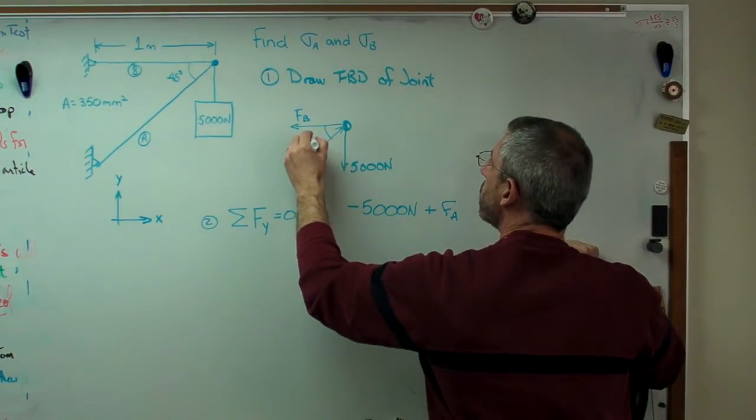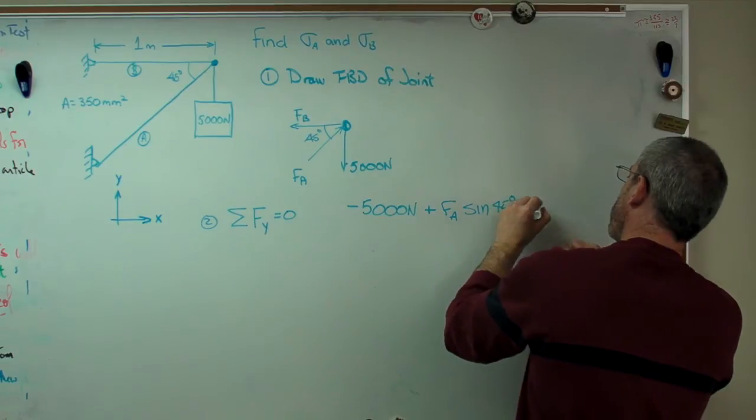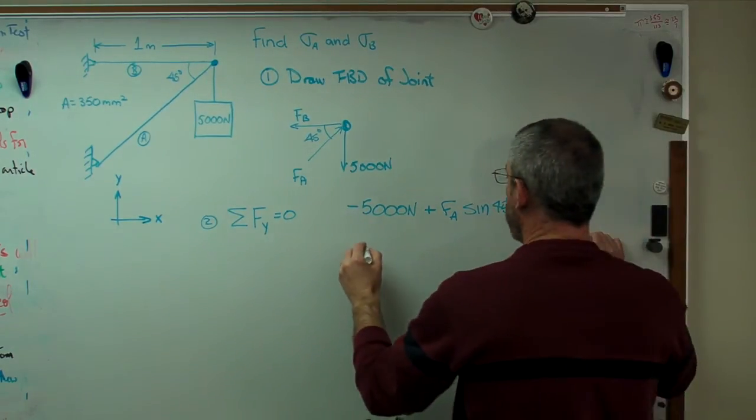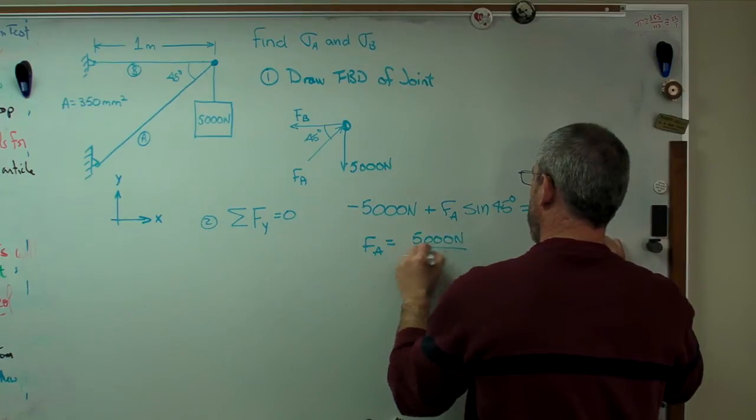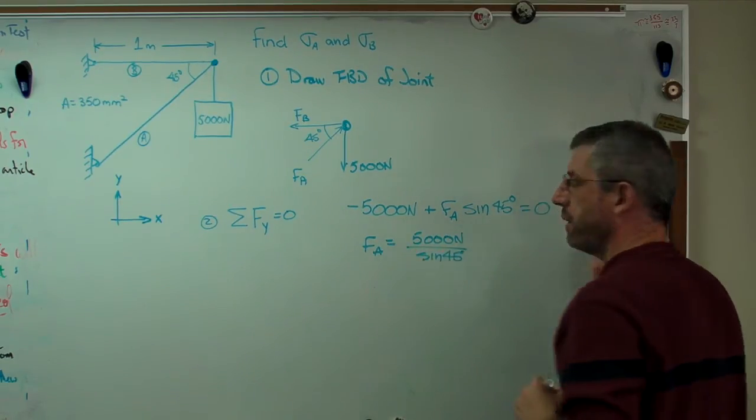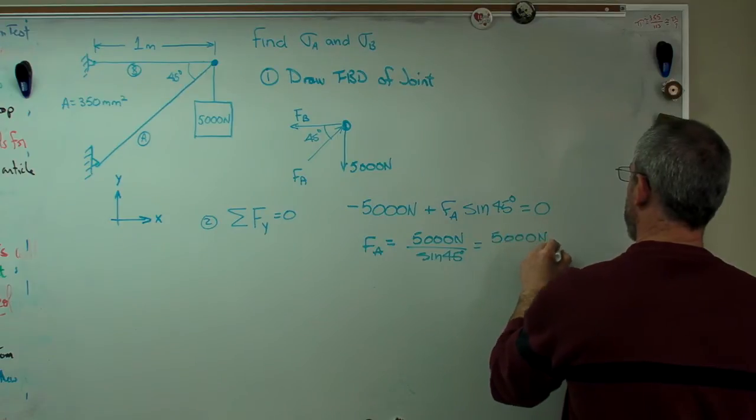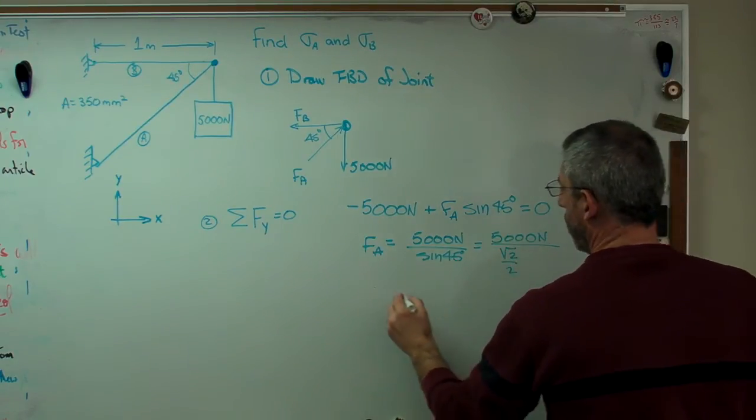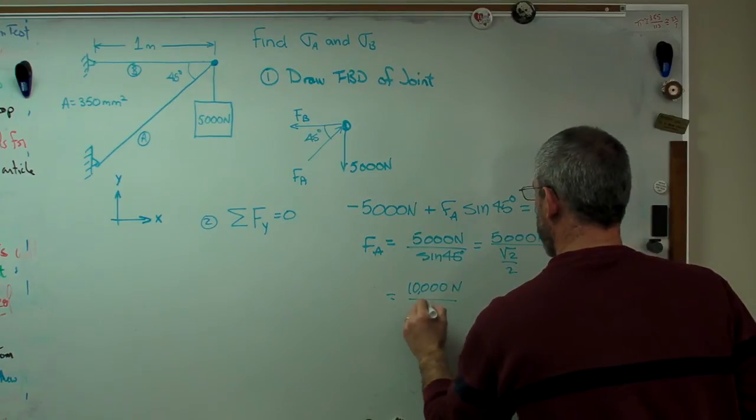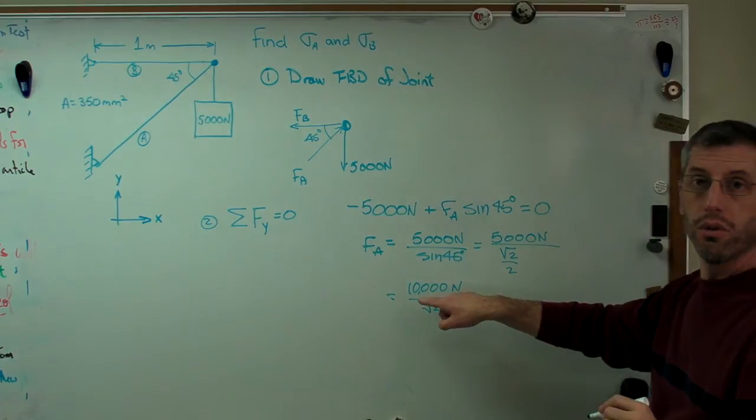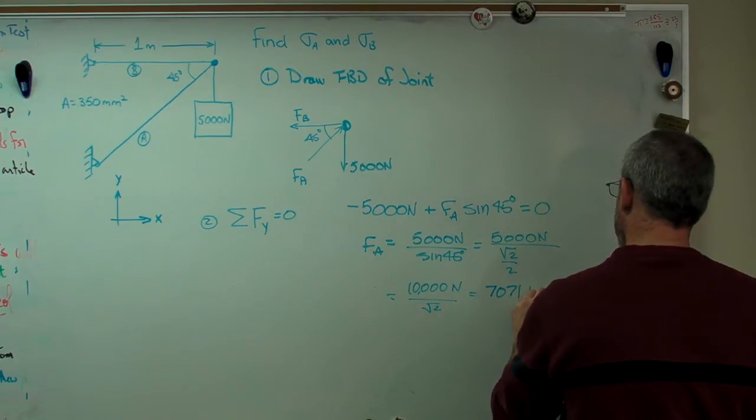So minus 5,000 newtons plus the vertical component of FA. So that's FA, and if that's 45 degrees, then we'll call that FA sine 45 degrees. And that all has to equal zero. So another way to write this is like this. Now sine 45 is the square root of 2 over 2. And that equals, make sure I get enough zeros there.